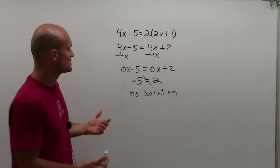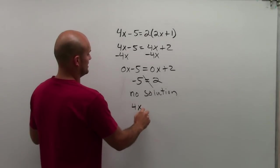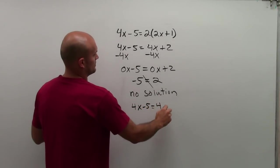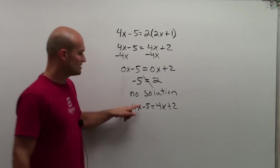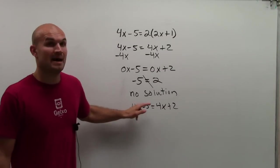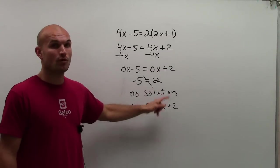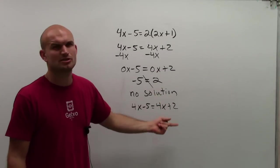Another way to, if you just look at that, just look at it out loud. 4 times the number minus 5 is equal to 4 times that same number plus 2.